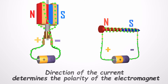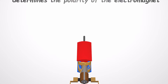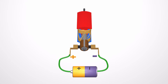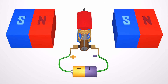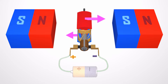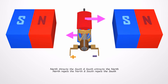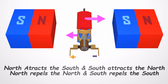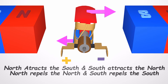Now, if we take this electromagnet and place it in the middle of two magnet poles as shown on the screen, the north end of the electromagnet would be repelled from the north end of the outer magnet and attracted to the south end of the outer magnet. The south end of the electromagnet would be repelled in a similar way, and the armature would rotate.